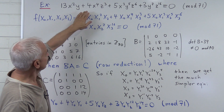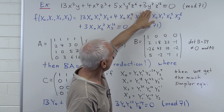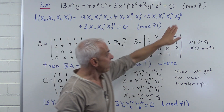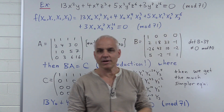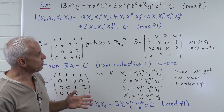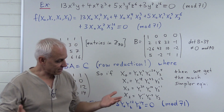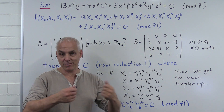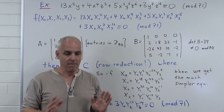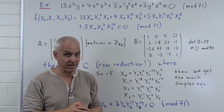Let's have a look at this Diophantine equation: 13x²y + 4x⁴z³ + 5x³y⁵z⁶ + 3y⁷z¹⁶ = 0, and we're working over the prime p = 71. We want to find solutions mod 71. Of course, since that's just a finite problem, we could get a computer program to run through all the possibilities and list all the solutions. But this illustrates a more general method that actually gives us more information at the end.